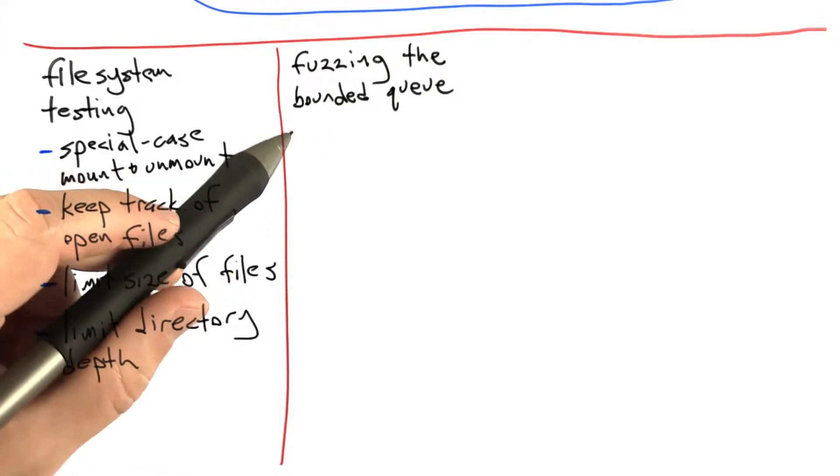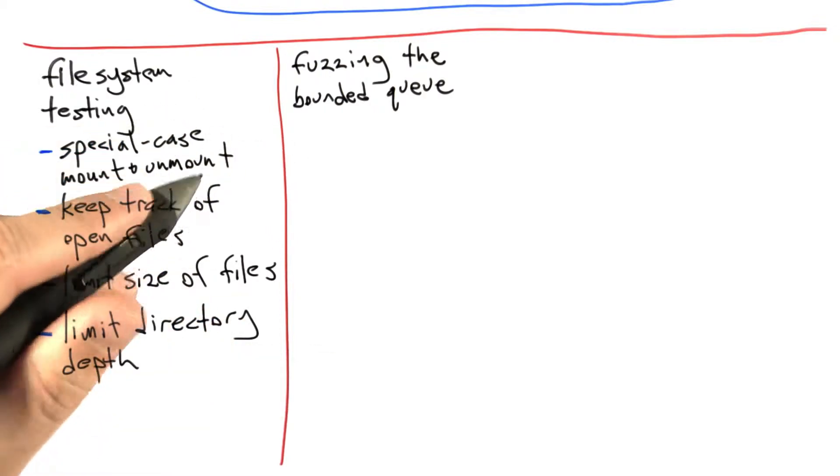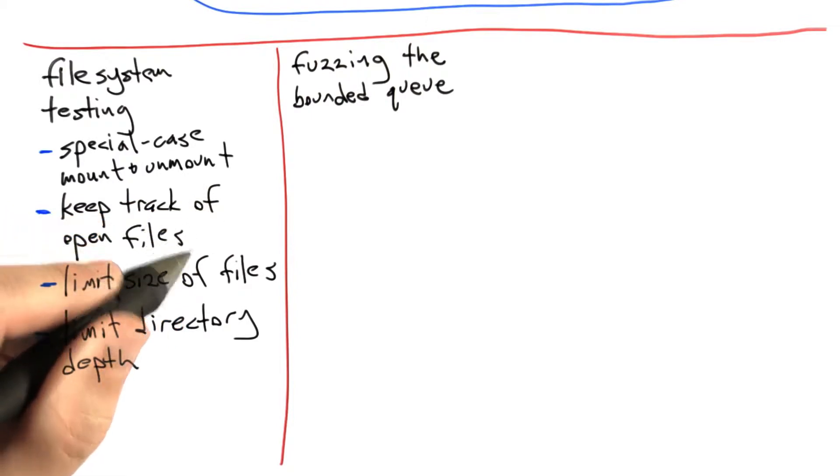And one thing we might want to ask ourselves is, did that fuzzer do a good job at all? Well, if you wrote a queue that found all five of the bugs that I seeded in the queue data structure, then you probably did a pretty good job, but let's take a look again.